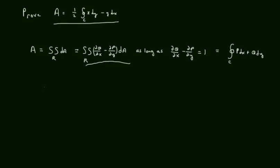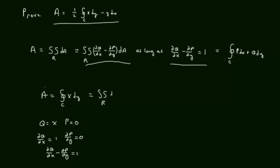Can you come up with a p and q that has this property? The area equals the closed line integral of x dy. In this case, q equals x, p equals 0, so partial q partial x equals 1 and partial p partial y equals 0. The difference equals 1, so by Green's theorem it equals area.